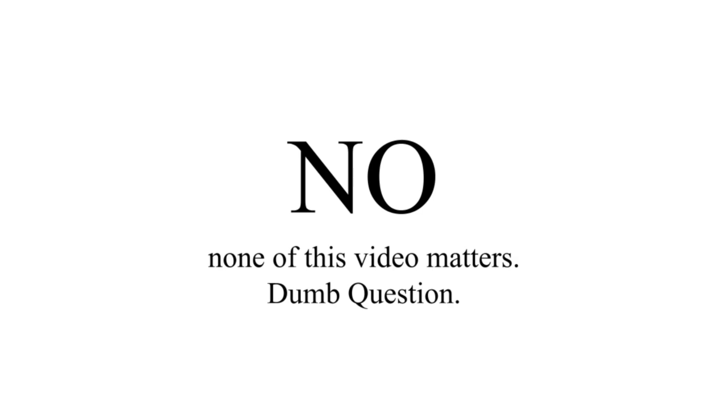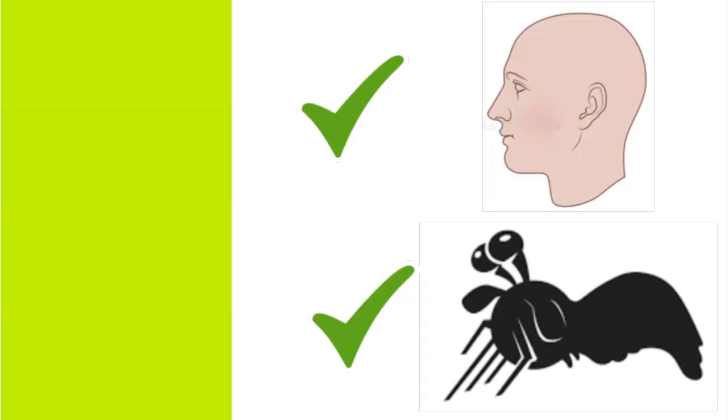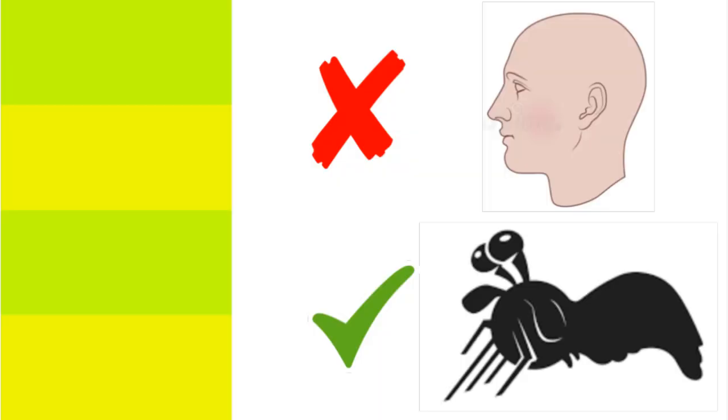But does it really matter? The human eye can't distinguish between colors that are too closely related. But remember, you're still better at distinguishing colors than a mantis shrimp.